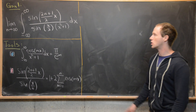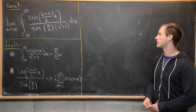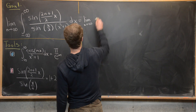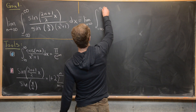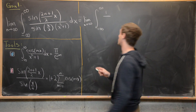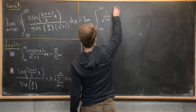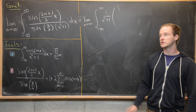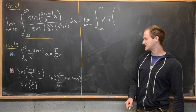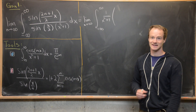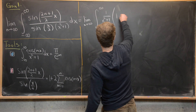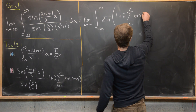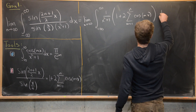Now we tackle the main goal: the limit of the improper integral. We write it as the limit as n→∞ of the integral from −∞ to ∞ of 1/(x²+1) times sine((2n+1)/2 · x) over sine(x/2), and replace the ratio using the right-hand side of the identity: 1 plus 2 times the sum from m=1 to n of cos(mx), dx.